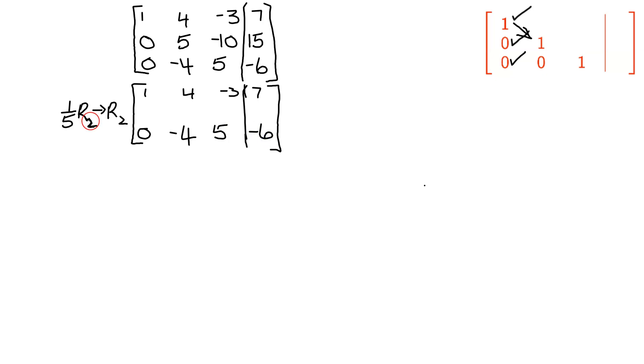Row 2 is 1 fifth of the old row 2. Most people don't like multiplying by 1 fifth, but remember that's the same as dividing by 5. So 0 divided by 5 is 0, 5 divided by 5 is 1, negative 10 divided by 5 is negative 2, and 15 divided by 5 is 3.